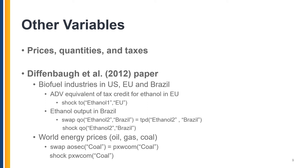The change in ad valorem equivalent of the tax credit for ethanol in the European Union is modeled as a shock to the exogenous variable TO, representing the percent change in the power of output tax or subsidy. Keep in mind that in GTAP model code version 7, a power greater than 1 represents a tax and a power less than 1 represents a subsidy.